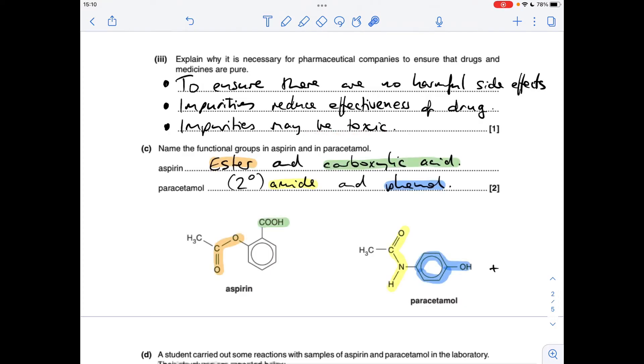Moving on to the functional groups in aspirin and paracetamol. I've color-coded them. Aspirin has the ester functional group and the carboxylic acid functional group. Paracetamol has an amide functional group—it's actually a secondary amide but that wasn't required—and a phenol group.